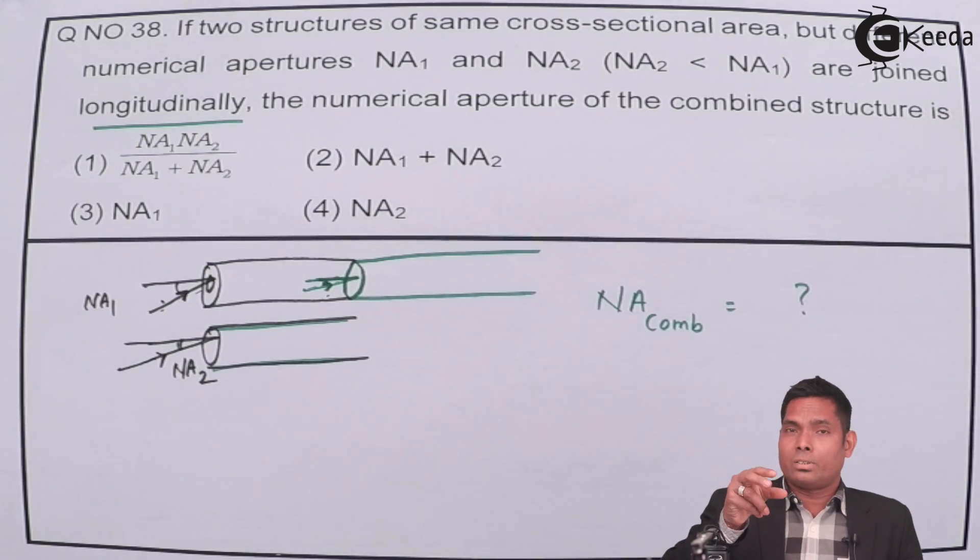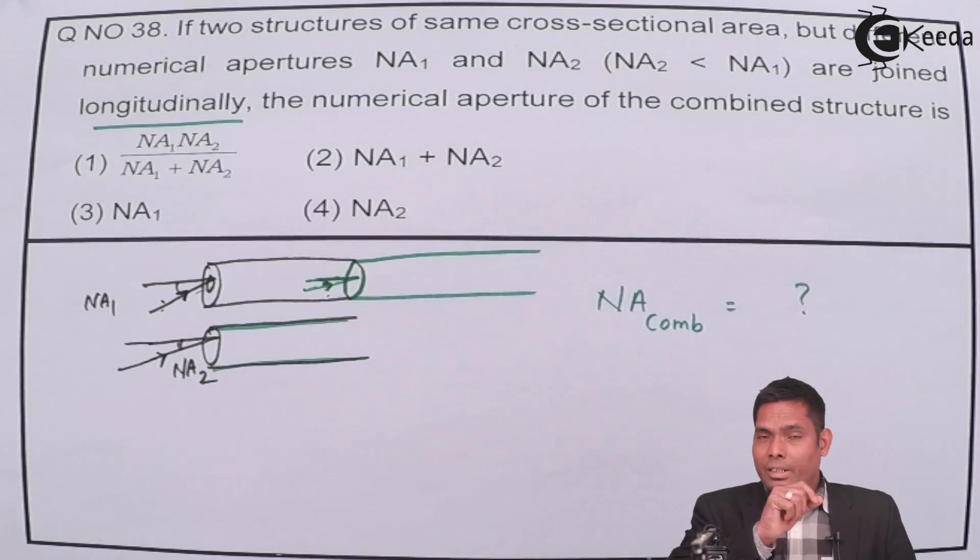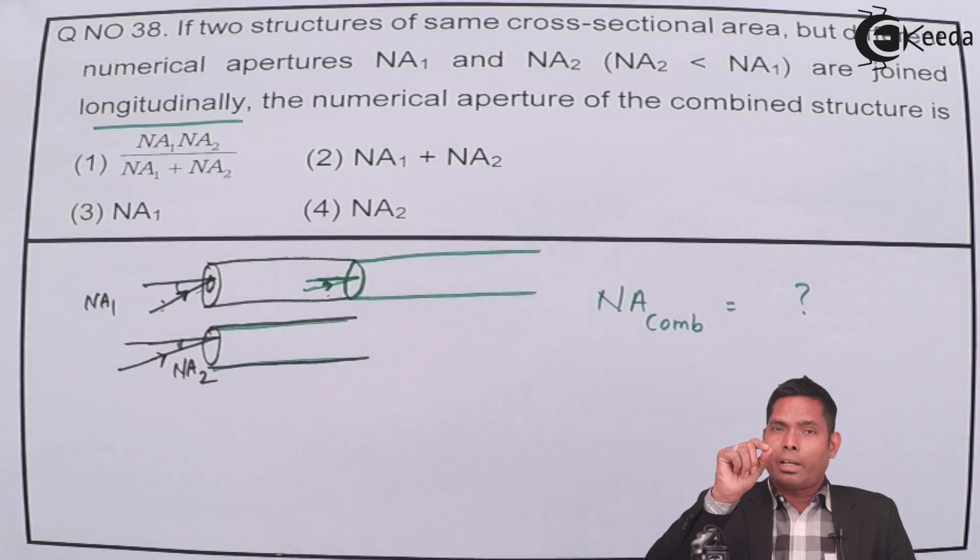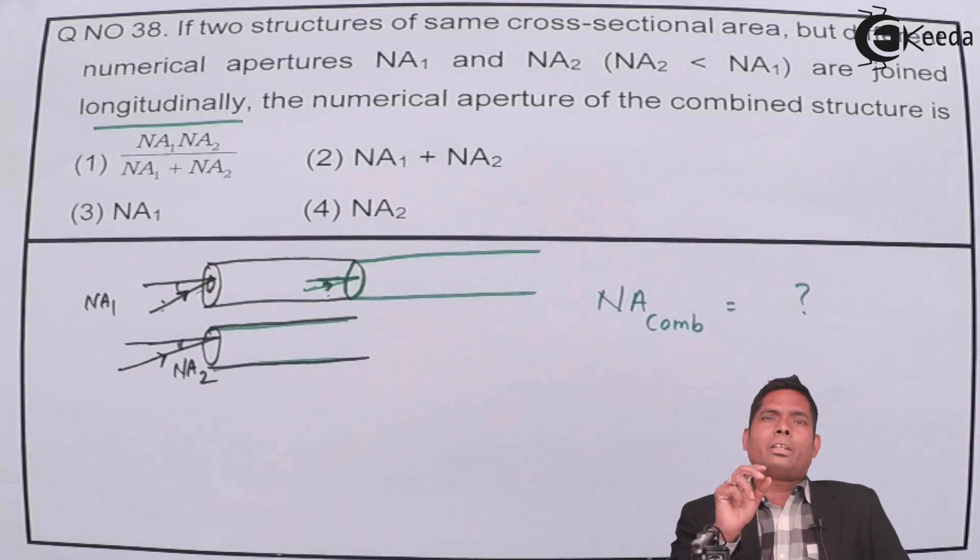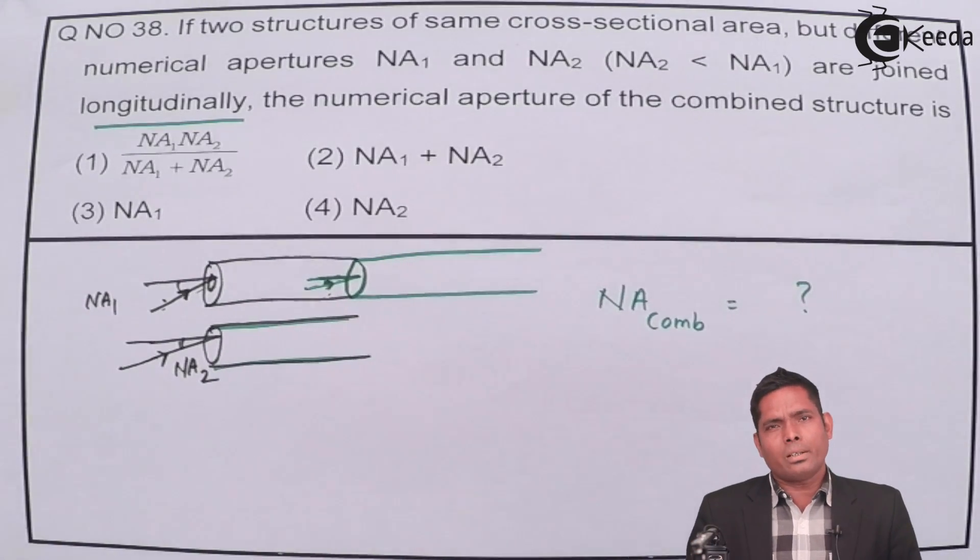But in the first case, suppose that total internal reflection, the critical angle is happening at 30 degrees. Then if you allow the light to enter at an angle of 25, then there will be no total internal reflection in the first case, but in the second case it will be total internal reflection.